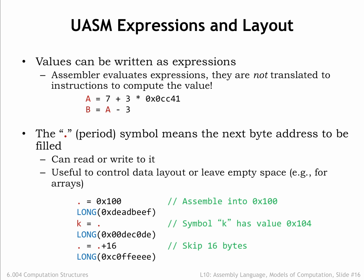One last UASM feature: there's a special symbol called dot, whose value is the address of the next main memory location to be filled by the assembler when it generates binary data. Initially dot is 0 and it's incremented each time a new byte value is generated. We can set the value of dot to tell the assembler where in memory we wish to place a value. In this example, the constant hex DEADBEEF is placed into location 0x100 of main memory.